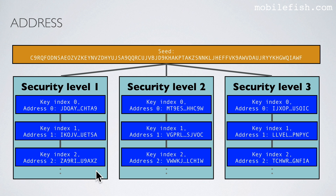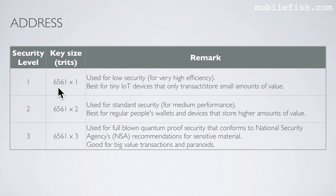All generated addresses have the same length. Security level 1 is used for low security — best for tiny IoT devices that only transact or store small amounts of value. Security level 2 is used for standard security — best for regular people's wallets and devices that store higher amounts of value. Security level 3 is used for full-blown quantum-proof security that conforms to the National Security Agency's recommendations for sensitive material — good for big value transactions and paranoids.